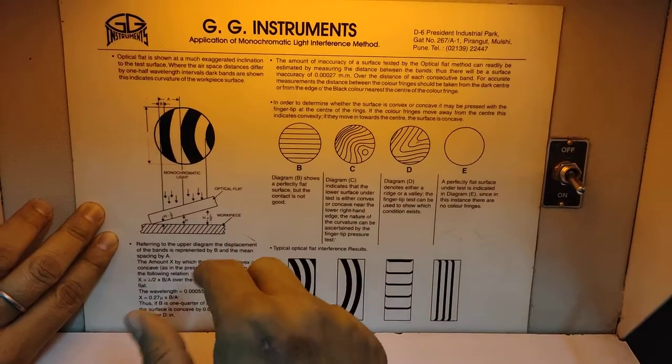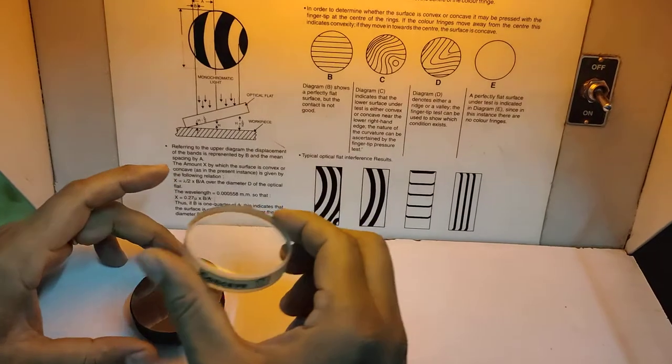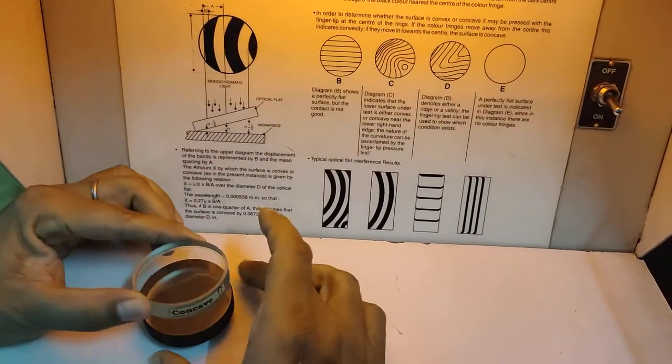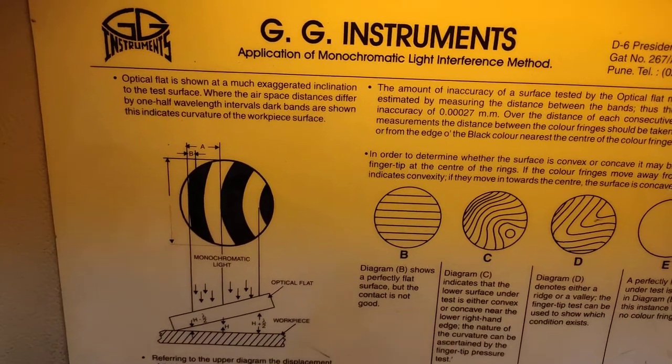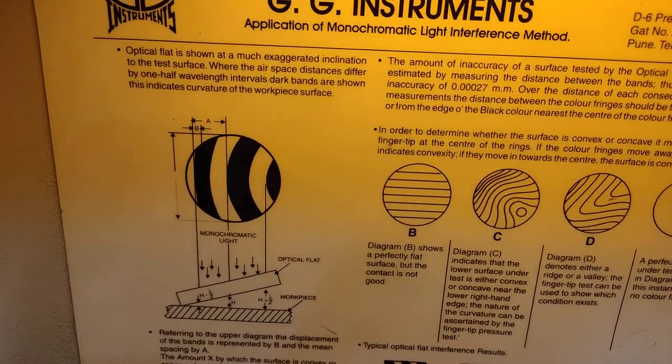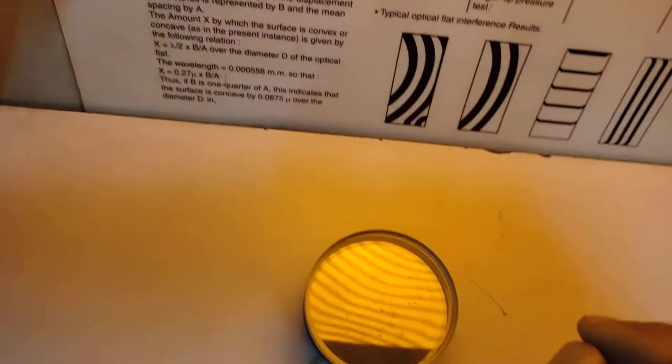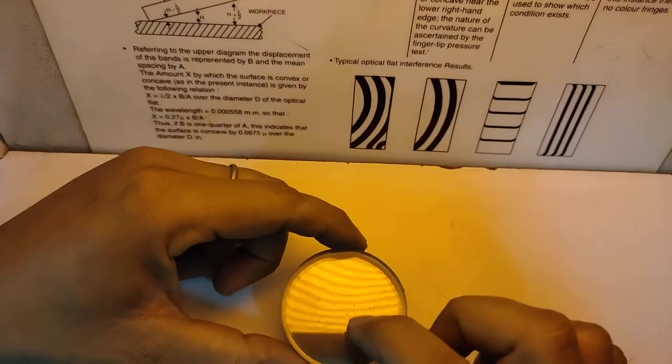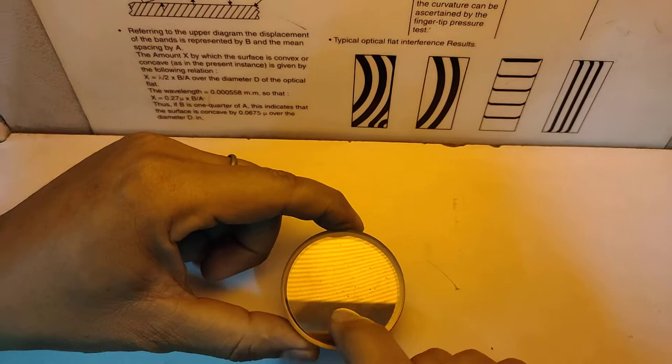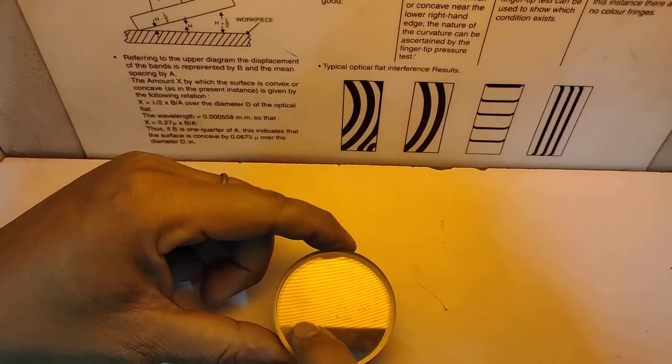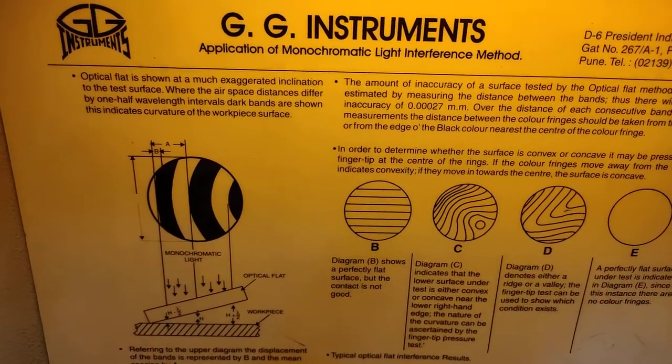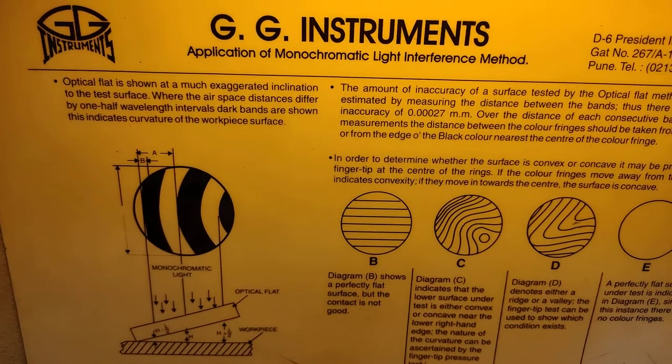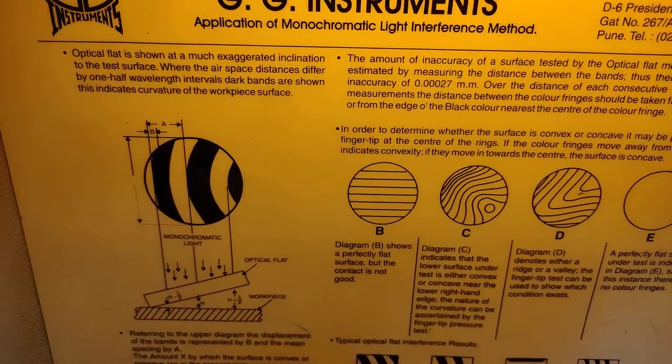If I am going to place any optical flat over this object which is going to be checked for optical flatness, the single wavelength directly passes on the optical flat. The first wave reaches to the bottom edge of this optical flat, and another wave reaches the optical flat and then reflects back.